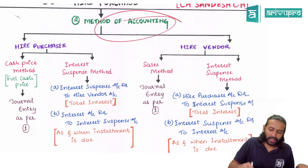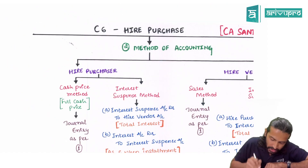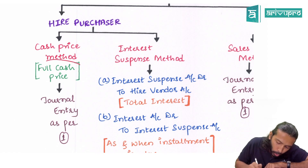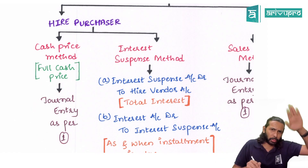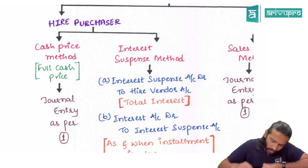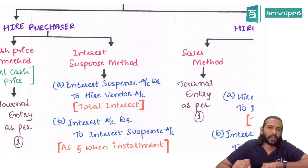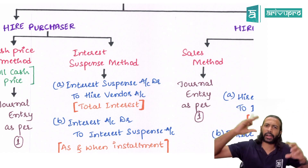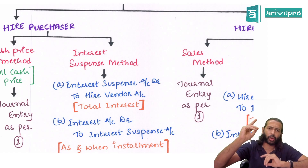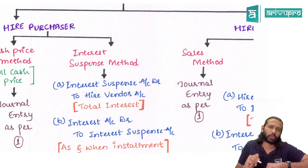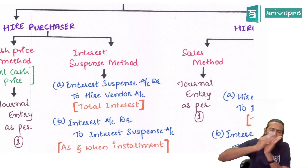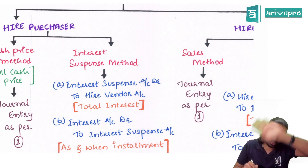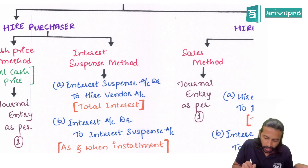Next, methods of accounting. For a hire purchaser, there are two methods. First is the Cash Price Method, also known as the Full Cash Price Method — the entries are the same as what we just covered. The second method is the Interest Suspense Method. Under this method, you calculate the total interest payable under the hire purchase agreement and park it in a dummy account called Interest Suspense Account: Interest Suspense Account debit to Higher Vendor — for the total interest under the entire hire purchase agreement.